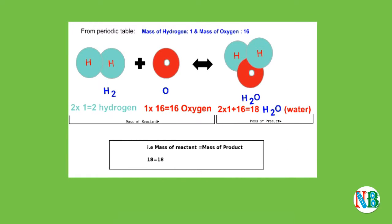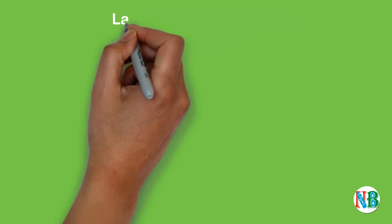For example, when two hydrogen combines with one oxygen to form water, two hydrogen and one oxygen are reactants whereas water is the product. On calculating and comparing, the total mass of reactant and product are equal.